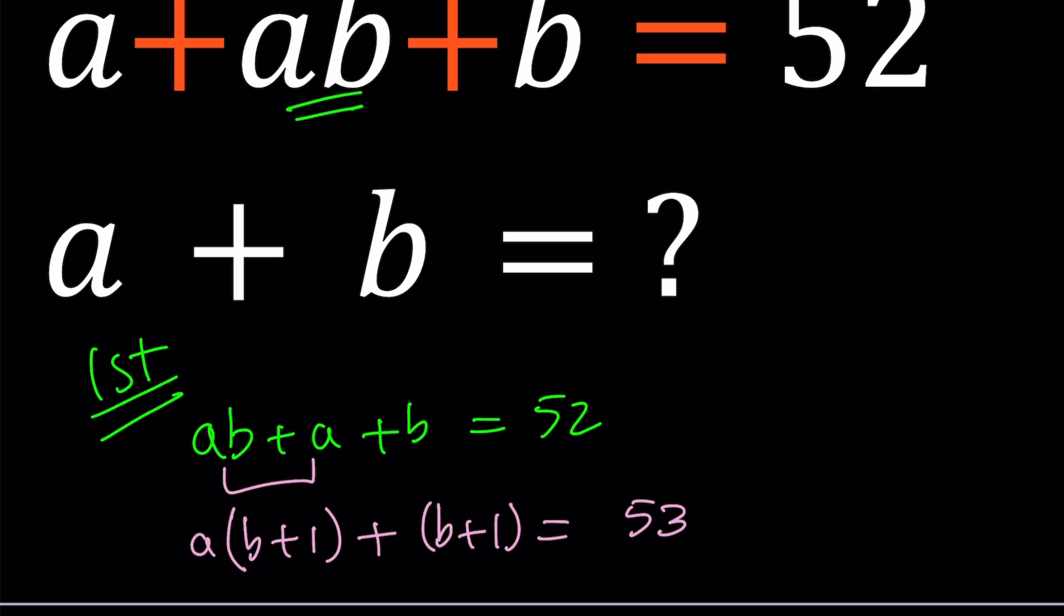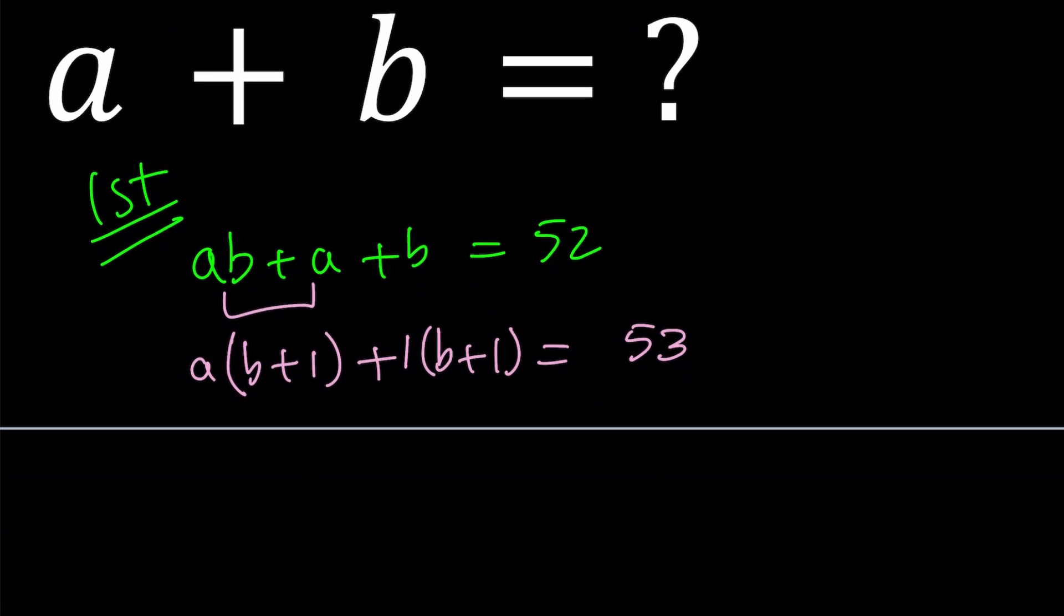And since b plus 1 is multiplied by nothing, we can just put 1 there. Now, this is factorable as a plus 1 times b plus 1. And notice that 53 is a prime number, which means there's only so many ways you can factor it.